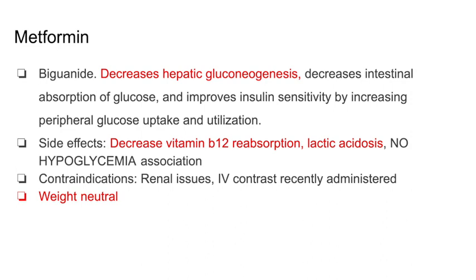Metformin is a big one in that it decreases hepatic gluconeogenesis, decreases intestinal absorption of glucose, and improves insulin sensitivity by increasing peripheral glucose uptake and utilization. Side effects of metformin include decreased B12 reabsorption, leading to B12 deficiency. Patients taking PPIs can also have a B12 deficiency — very high yield.